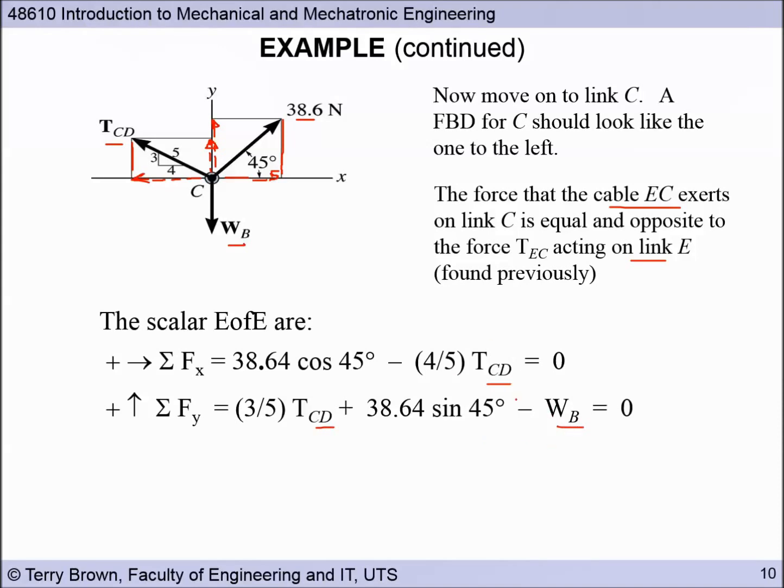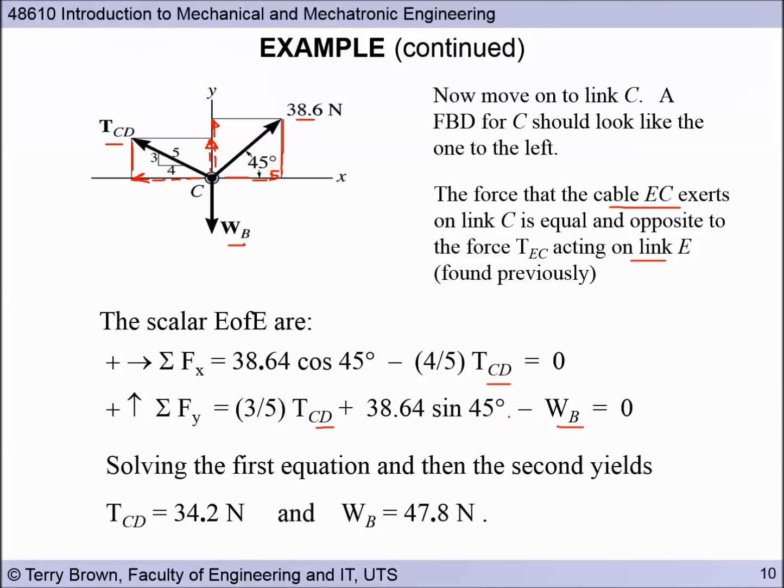So two unknowns, TCD and WB. Solve simultaneously. This one's a bit easier because there's only one unknown here. And we get our unknown forces: 34.2 for the cable force and 47.8 for the weight.